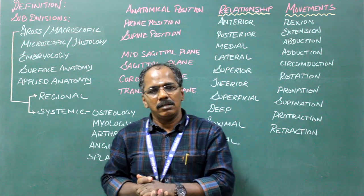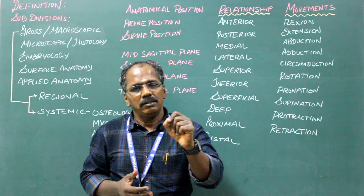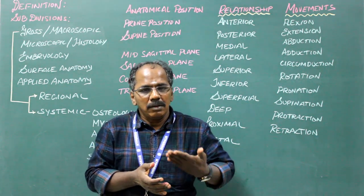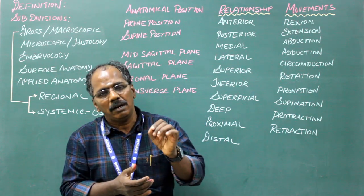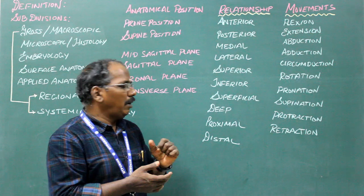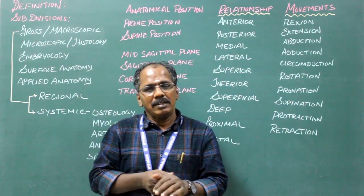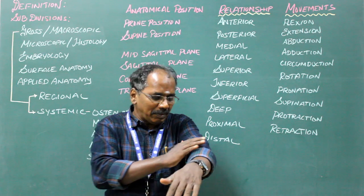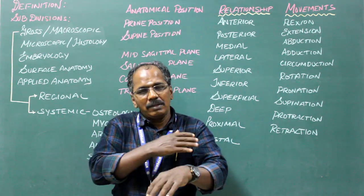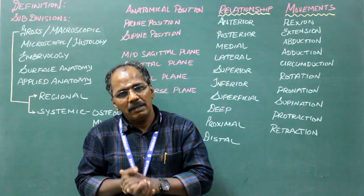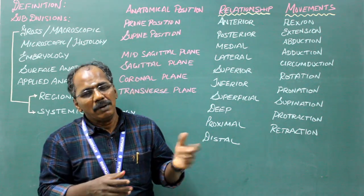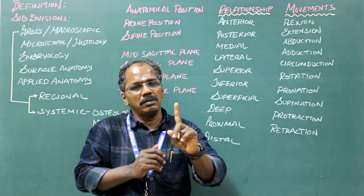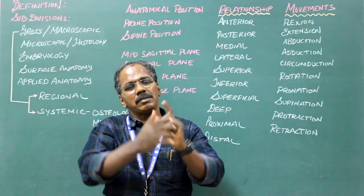Superior or cephalic means anything which is close to the head. Inferior or caudal means close to the foot. Superficial means structures which are nearer to the skin. Deep means structures which are away from the skin. For example, the outermost is skin, then fascia and connective tissue, then muscles, then bones. What is near the skin is superficial; what is further inside is deep.